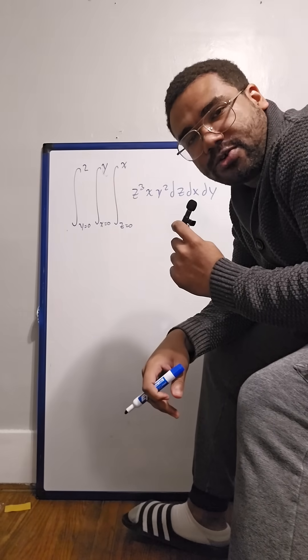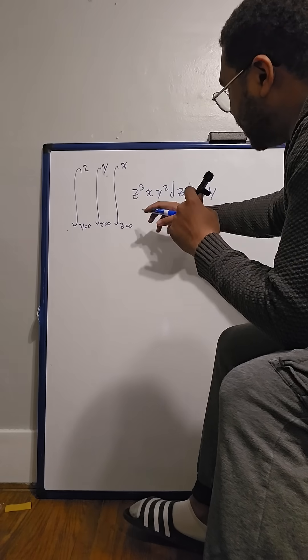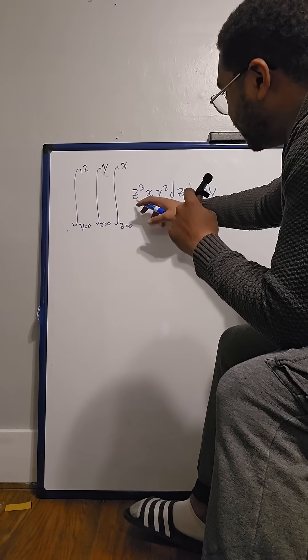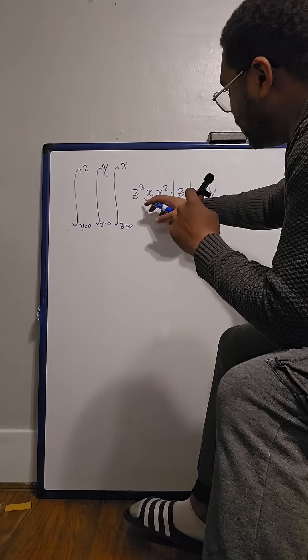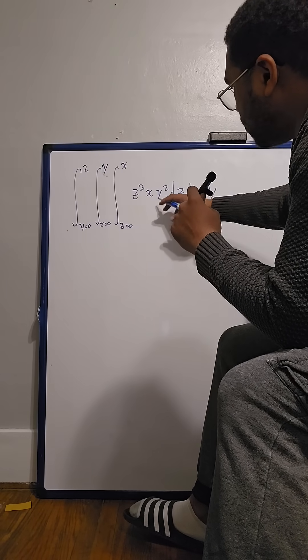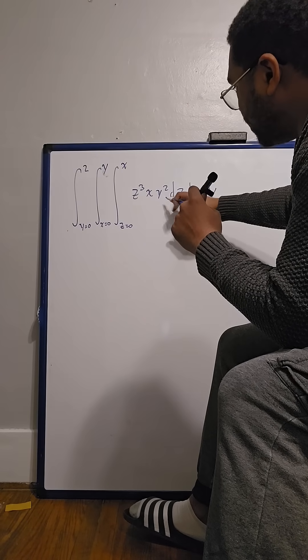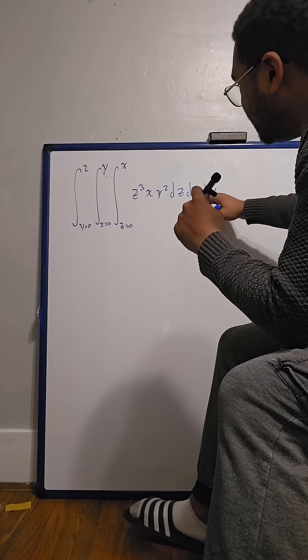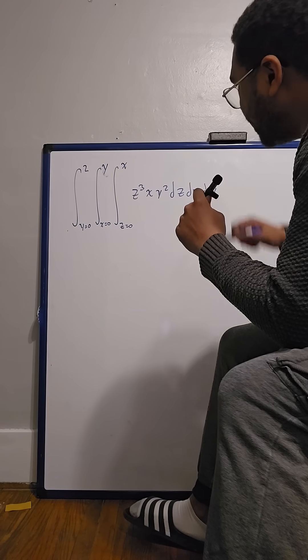Here we have a triple integral. We have the integral of z cubed x y squared dz dx dy.